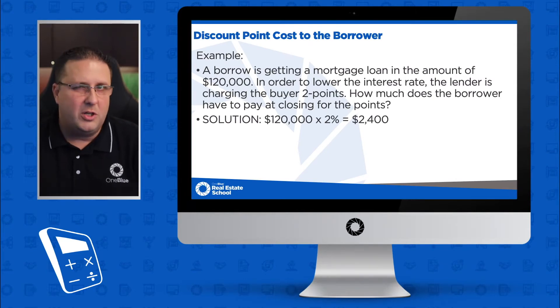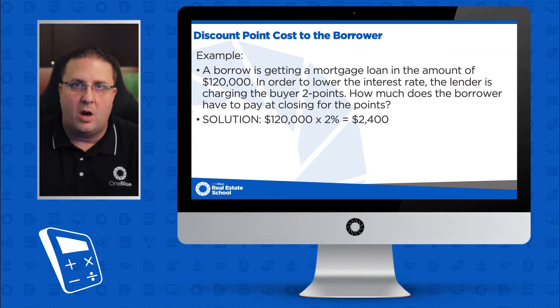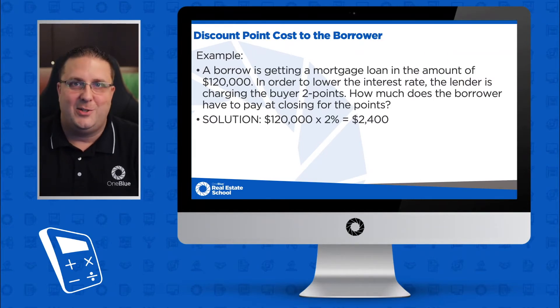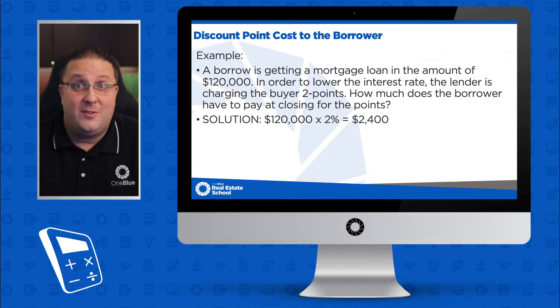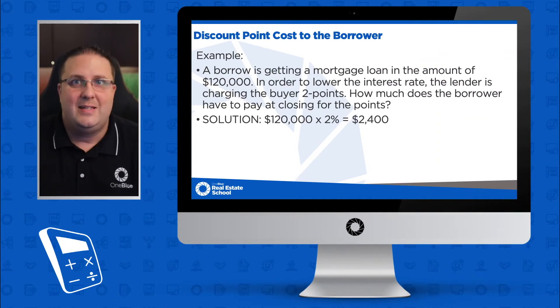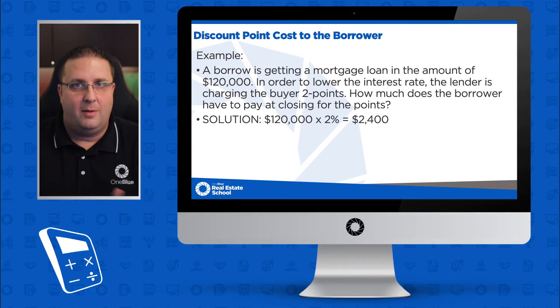Pretty straightforward. Remember, whatever the points are, just put a percent sign next to it. Two points is two percent, five points is five percent, ten points is ten percent. Whatever the points are, make it a percent.